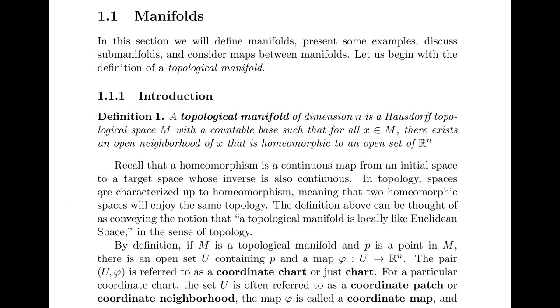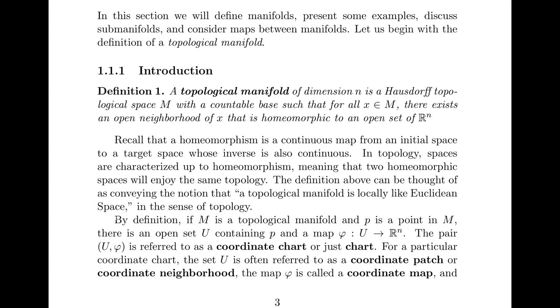In topology, we characterize spaces up to homeomorphism. That means that two homeomorphic spaces will enjoy the same topology. The definition above can be thought of as conveying the notion that a topological space is locally like Euclidean space. This is strictly in the sense of topology. It's not dealing with any other structure.